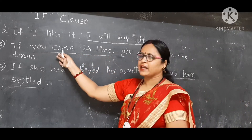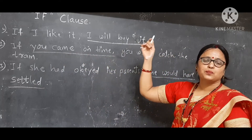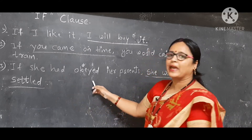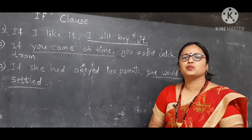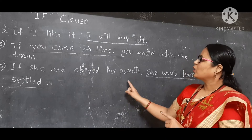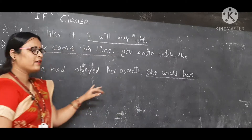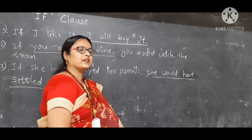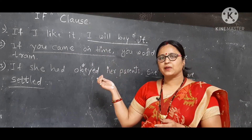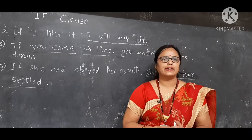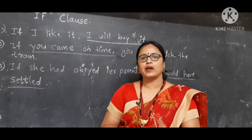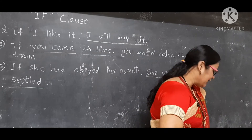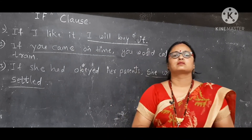In the third example, 'If she had obeyed her parents' is given and we have to complete the statement. Since the subordinate clause is in past perfect tense, we can write: 'If she had obeyed her parents, she would have settled.' My dear friends, according to these examples you can also complete given sentences using the formula and rules we have learnt in this video. All the best for your activity — do it positively!